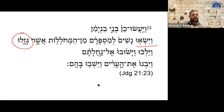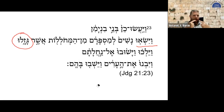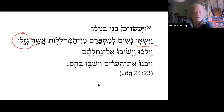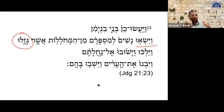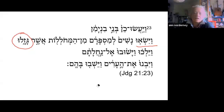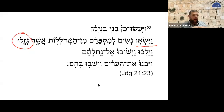When Joseph says 'I was abducted and brought here' — ganav gunavti me'aretz ha'ivrim, 'I was indeed stolen from the land of the Hebrews' — it is the same verb as lo tignov, 'thou shalt not steal.' The word ganav also made its way into Yiddish, and that Yiddish word found its way into the German language as another term for thief.